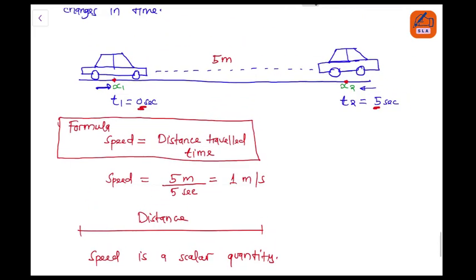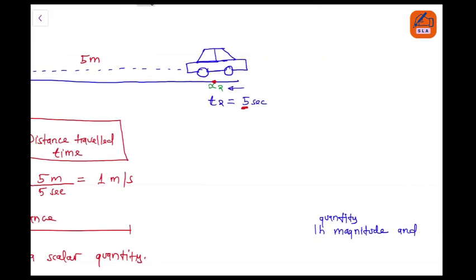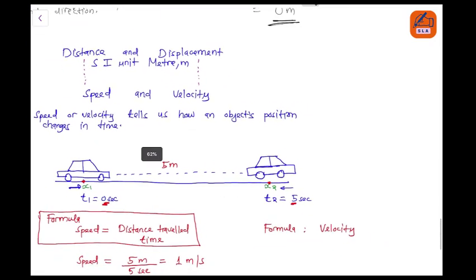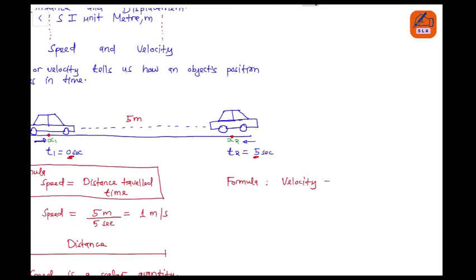But what about velocity? You're asking. We haven't forgotten. You're asking and I'm telling you, we haven't forgotten. So the formula for velocity. Velocity, I told you here, goes together with displacement. It goes together with displacement. So velocity is equal to displacement.